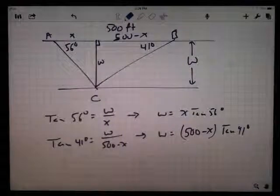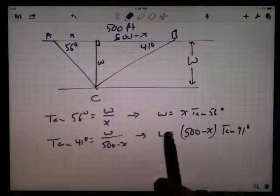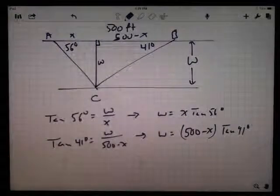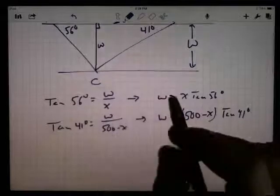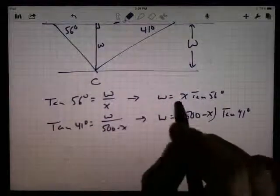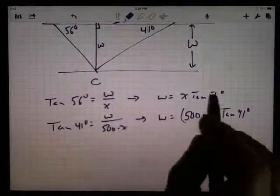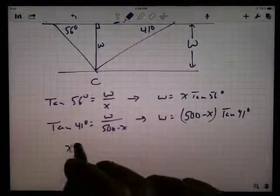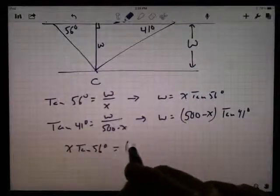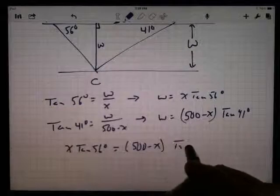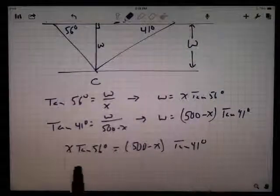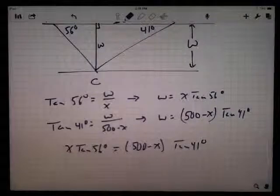Now, what I end up with here is two variables, but two equations. I need to solve them simultaneously. Actually, partly there anyway, because I've got them both solved for W, I can set them equal to each other. So W equals this, W equals that. These two numbers must be equal to each other. So X times the tangent of 56 degrees should equal 500 minus X times the tangent of 41 degrees. Now what I have is one equation with one variable. I ought to be able to solve for X.